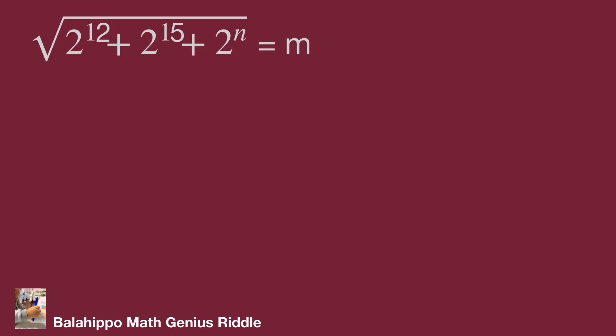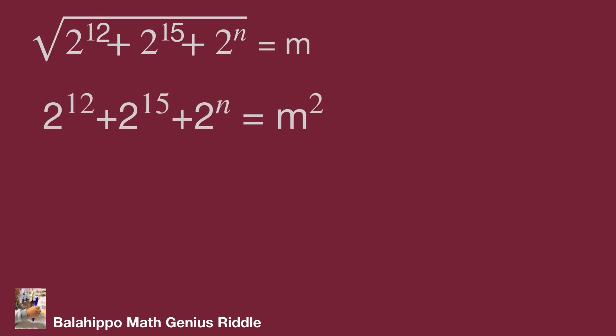The question is: square root of 2 power of 12 plus 2 power of 15 plus 2 power of n, equal to n. Let's start by squaring both sides of the equation. Then we have 2 power of 12 plus 2 power of 15 plus 2 power of n equal to n squared.